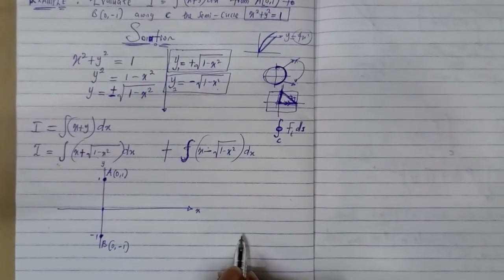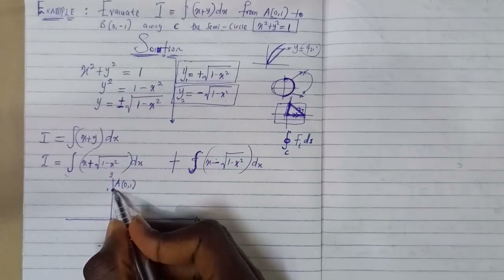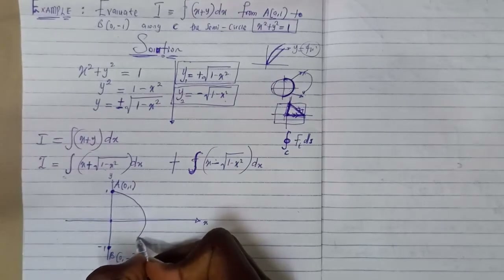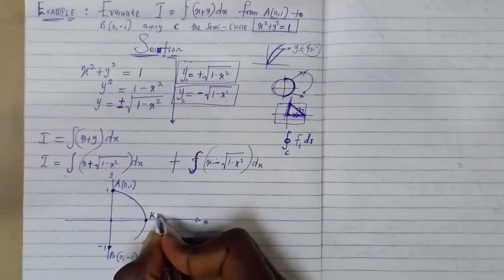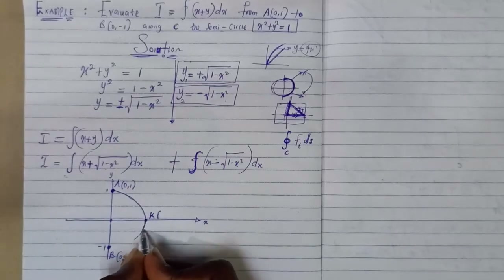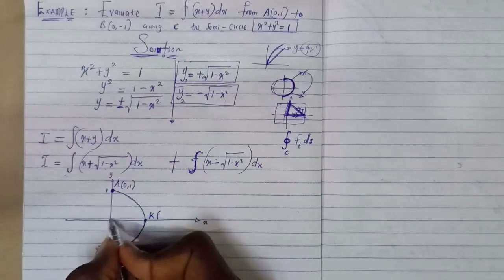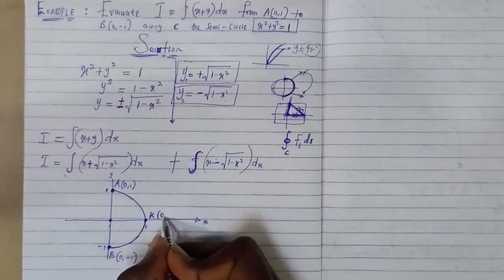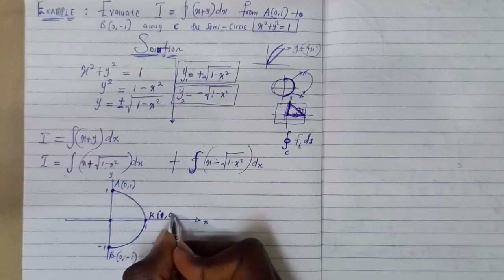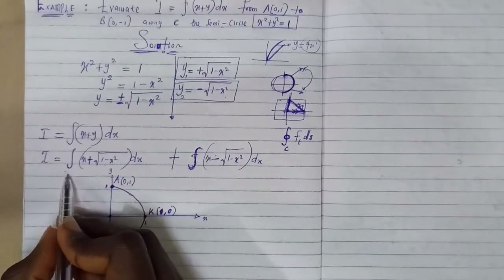Moving along the semi-circle in the positive direction, we identify a third point K. For a perfect unit semi-circle, the radius from center to any boundary point is one, so when the path reaches the rightmost point, x = 1 and y = 0. Therefore, point K has coordinates (1, 0). So the path splits into arc A to K, and arc K to B.